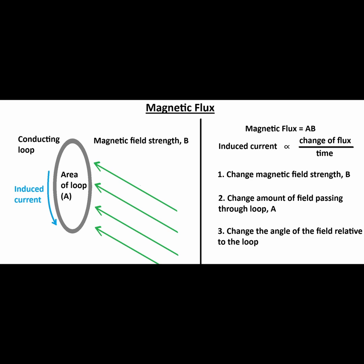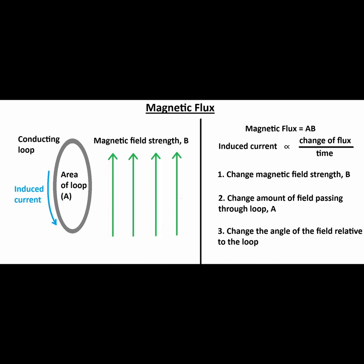Third, we can change the angle by which the magnetic field passes through the loop. A narrower angle will make the area appear very small relative to the field lines passing through. If the magnetic field is parallel to the face of the loop, that's equivalent to having no magnetic field entering the loop.